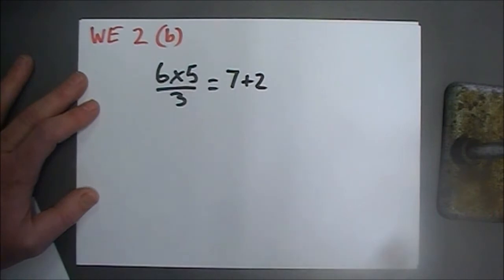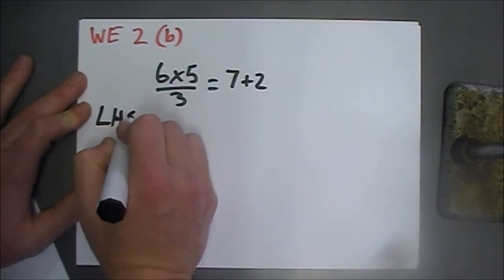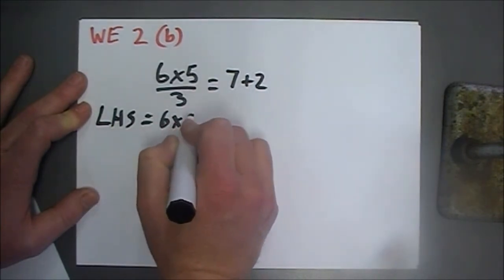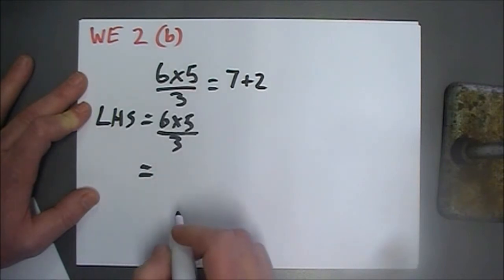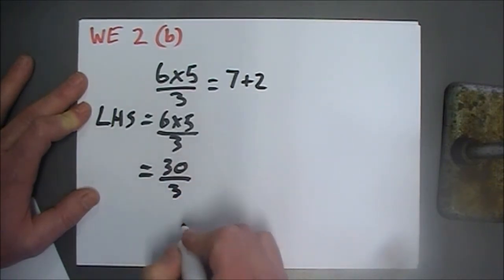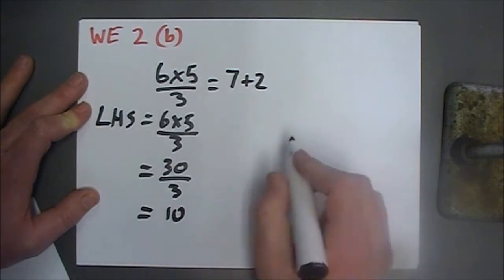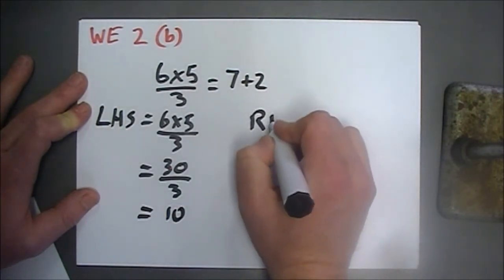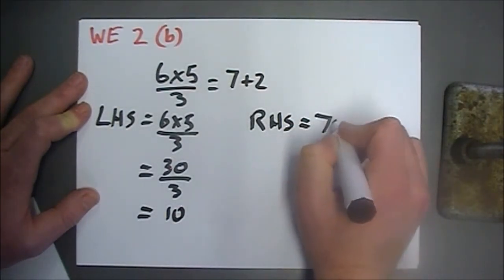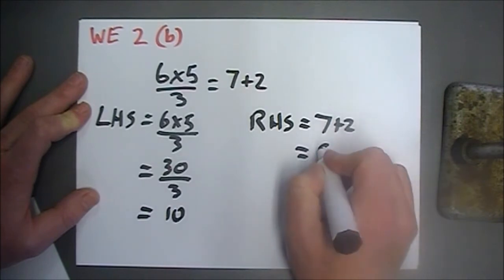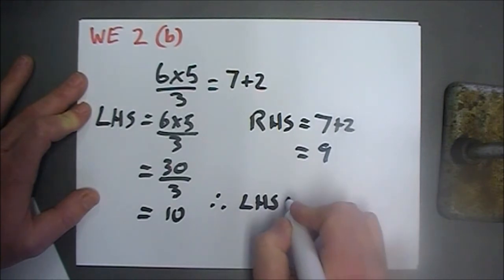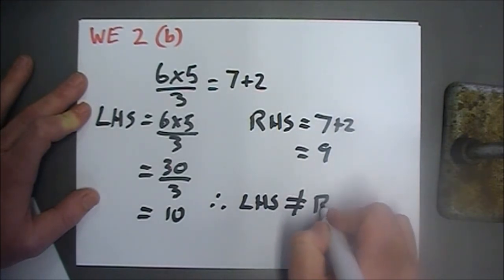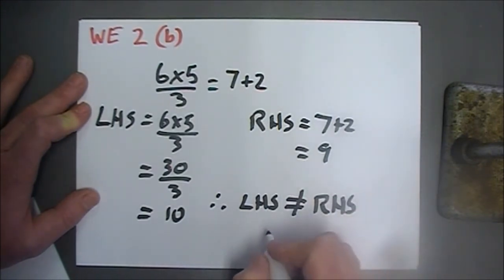Part B: 6 times 5 over 3 equals 7 plus 2. Looking at the left-hand side, 6 times 5 is 30, divided by 3 equals 10. The right-hand side, 7 plus 2, equals 9. Therefore, the left-hand side does not equal the right-hand side — false.